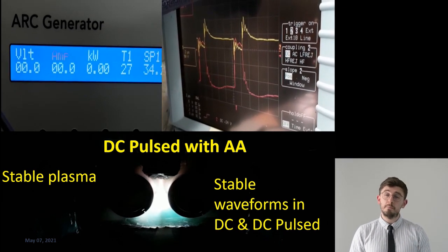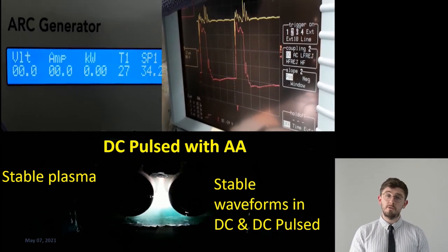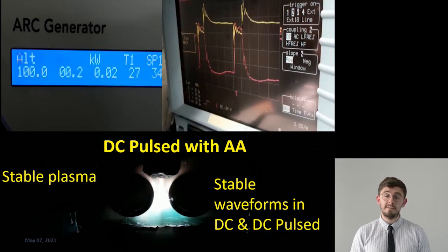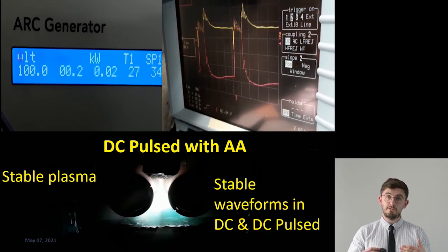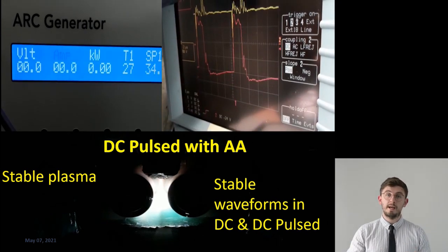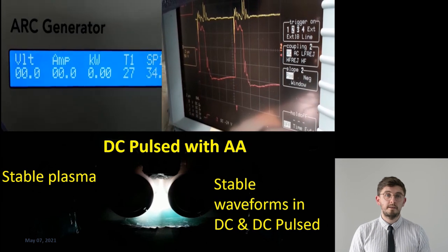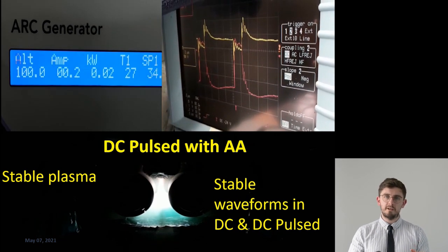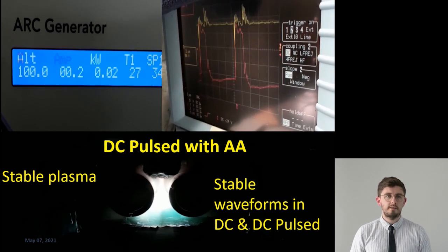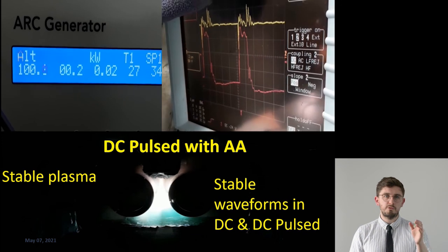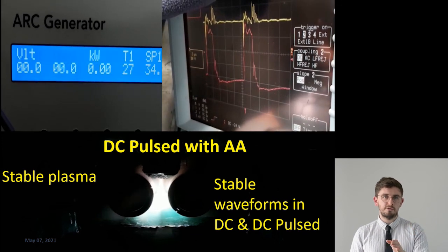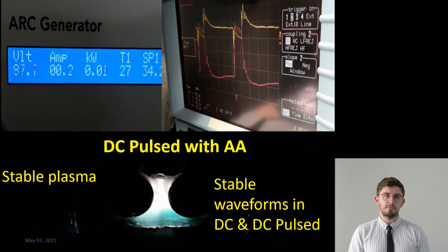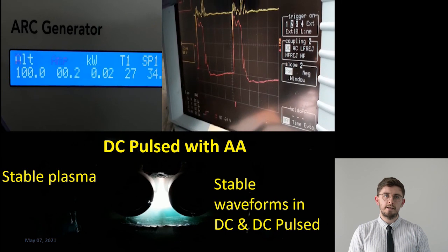On the right, the pink is the cathode voltage, and in yellow, that is the anode voltage. You can see that as we increase from 0 to 100 volts, it happens stably. At the bottom, you can see what happens to the plasma visually — when we go from 0 to 100 volts on the anode, you can see an increase in intensity of the plasma near the anode.